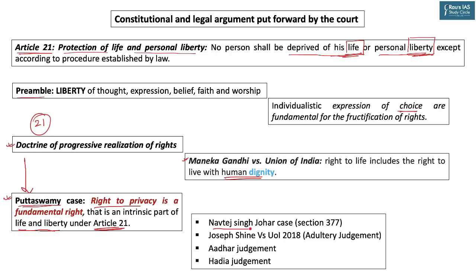The Puttaswamy judgment ensured that in the Navtej Singh Johar case, the Supreme Court decriminalized physical intimacy between two consenting adults of the same sex, as it is a private matter and privacy is a fundamental right. Consequently, the Joseph Shine versus Union of India 2018 case — the adultery judgment — followed. Personal data, health information, political beliefs, religion, and gender are all private, so the government cannot force citizens to disclose these; this was concluded in the Aadhaar judgment — all flowing from Puttaswamy.